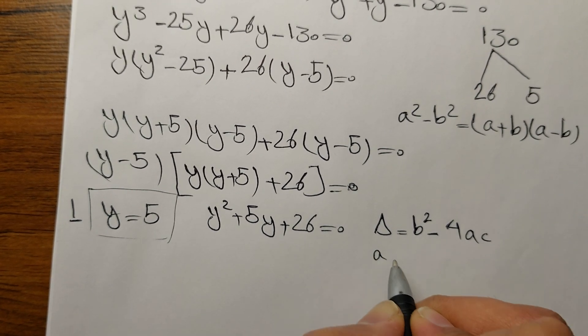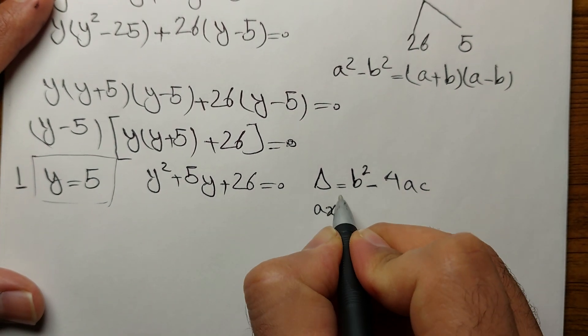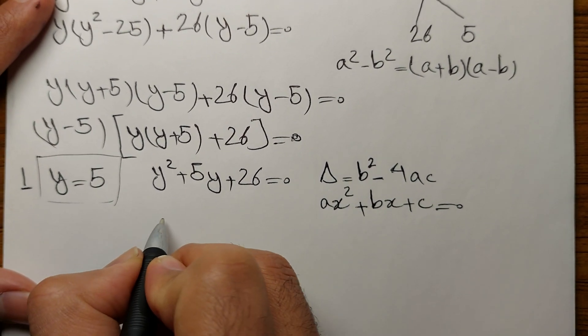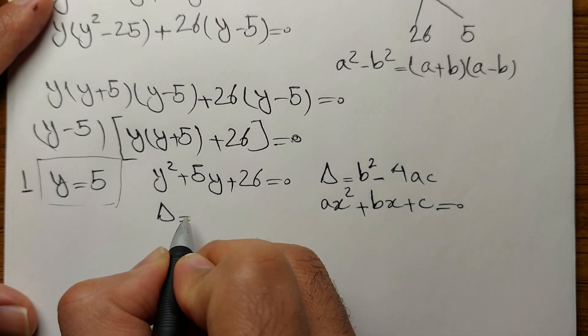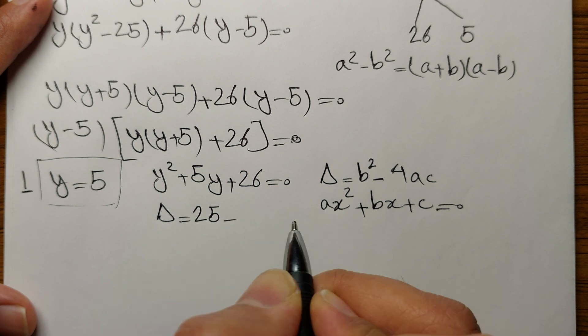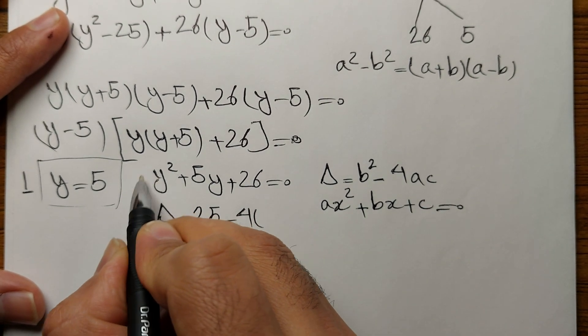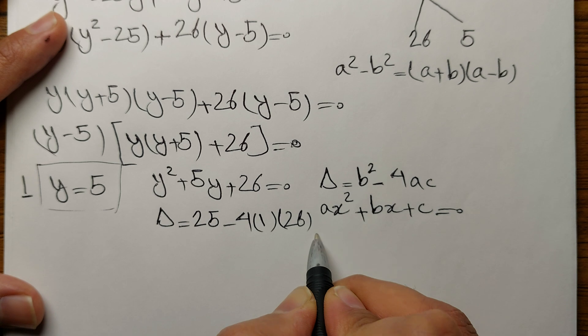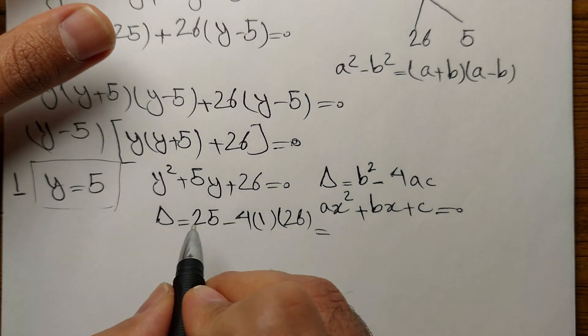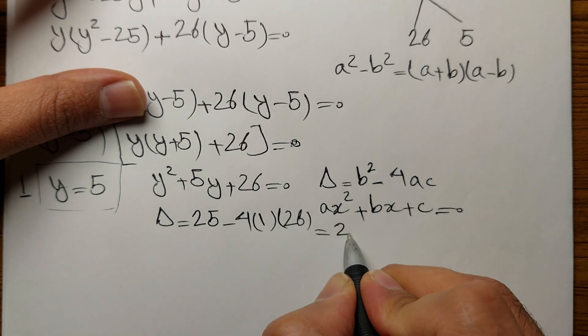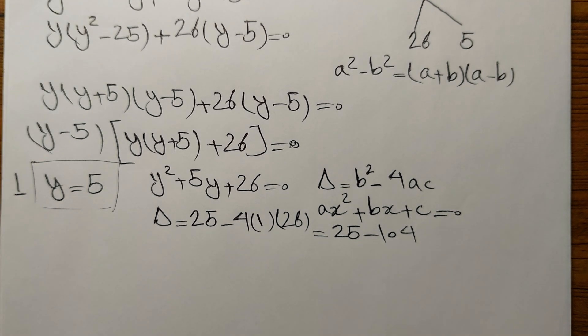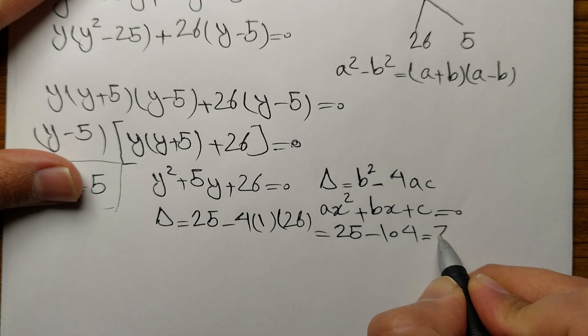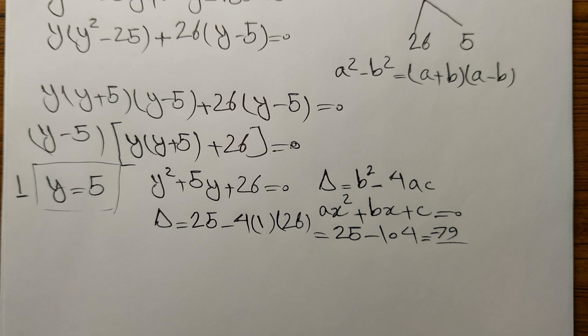Delta equals b squared minus 4ac. The general formula for a quadratic function is ax squared plus bx plus c equals 0. Let's find the delta. Delta equals b squared, 5 squared, 25 minus 4a is 1 times c is 26. Obviously that's a negative number. That's 25 minus 104, which is minus 79.